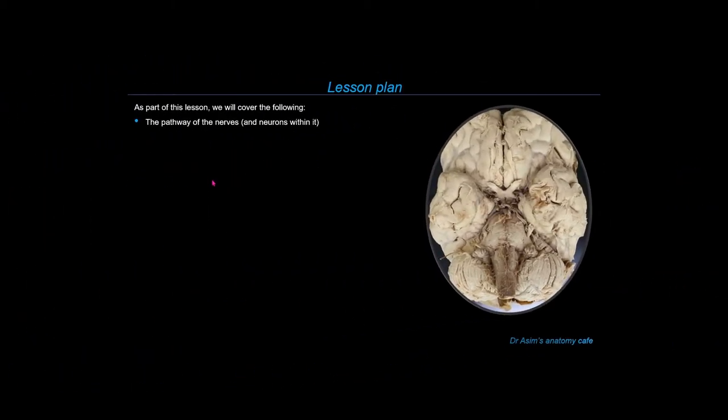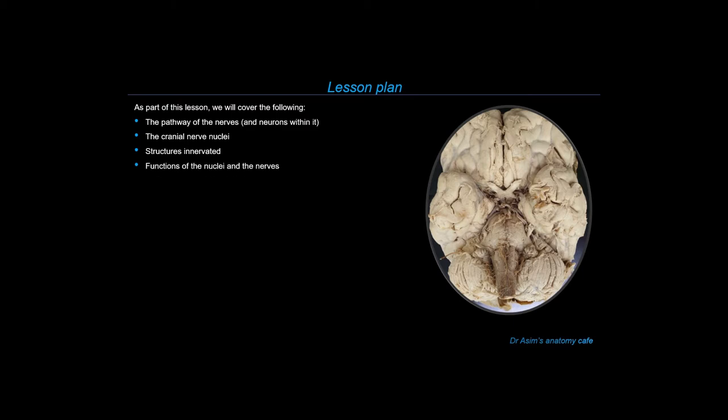As part of this lesson, we'll talk about the pathway of the trigeminal nerve. We'll learn about the nuclei which give off different neurons that contribute to the trigeminal nerve and its three branches. Then we'll talk about the structures which are innervated by this nerve, and then the functions of the cranial nerve nuclei that contribute to the formation of the trigeminal nerve. By doing so, we will understand the function of the trigeminal nerve as a whole.